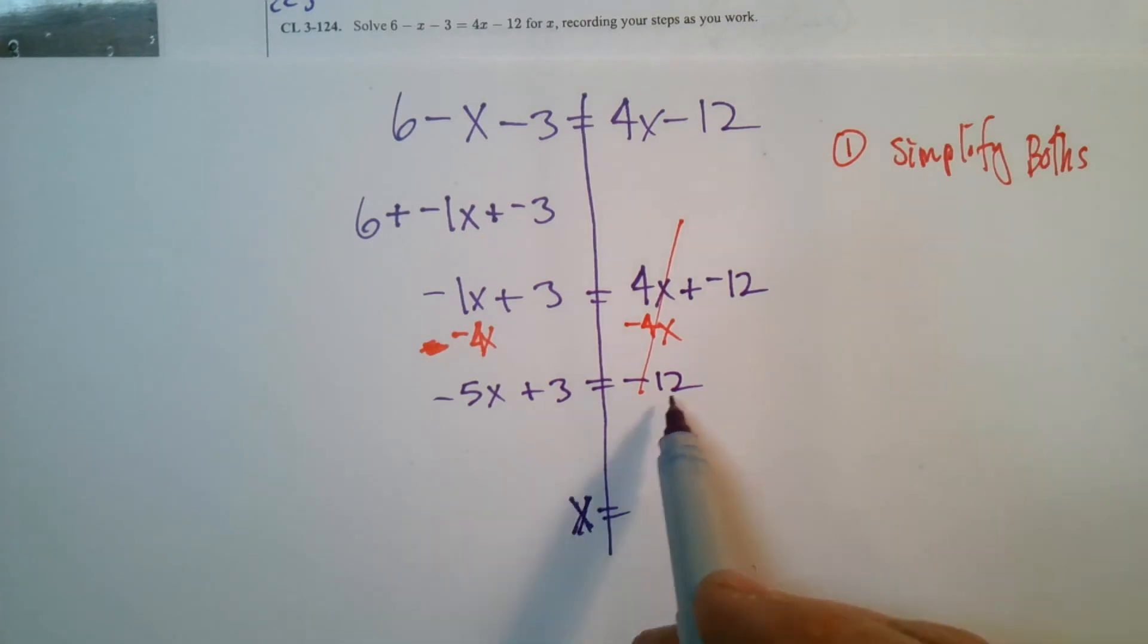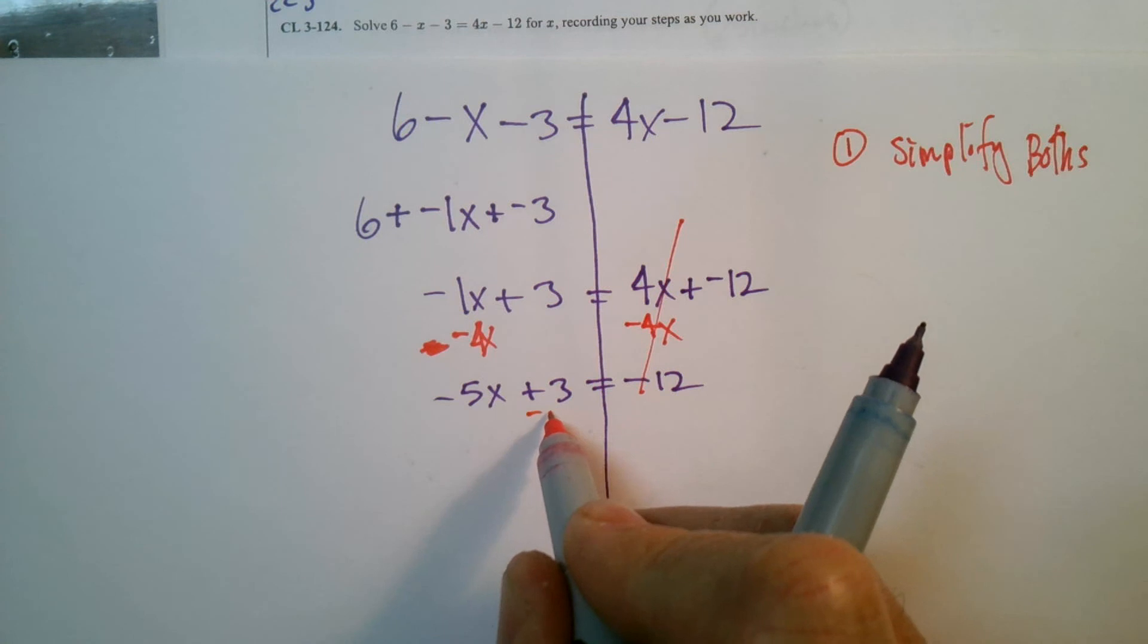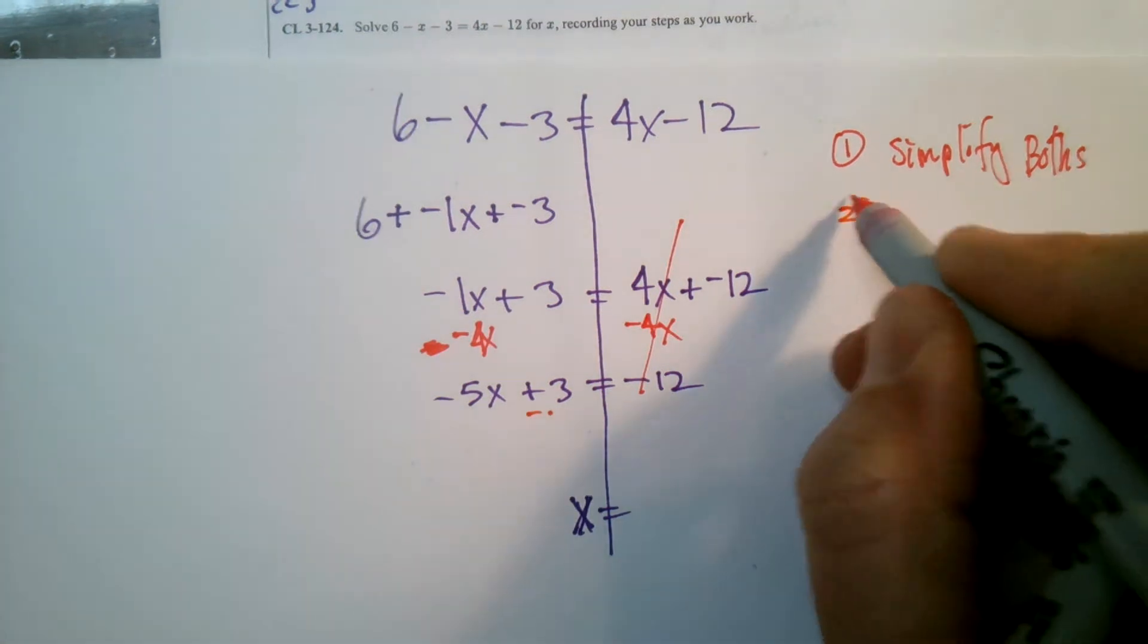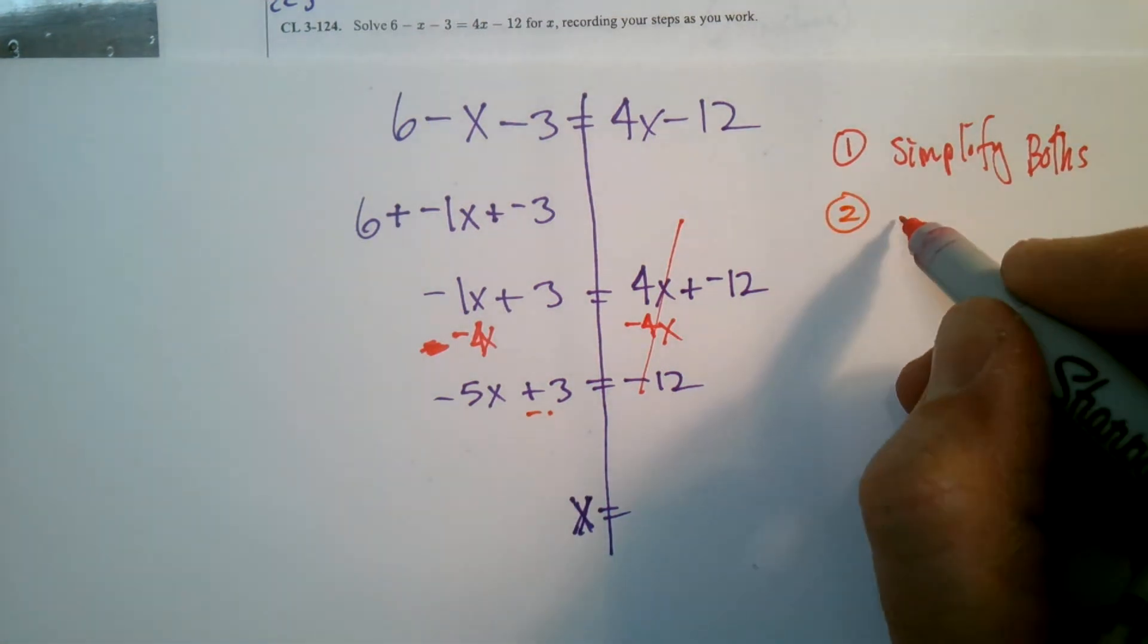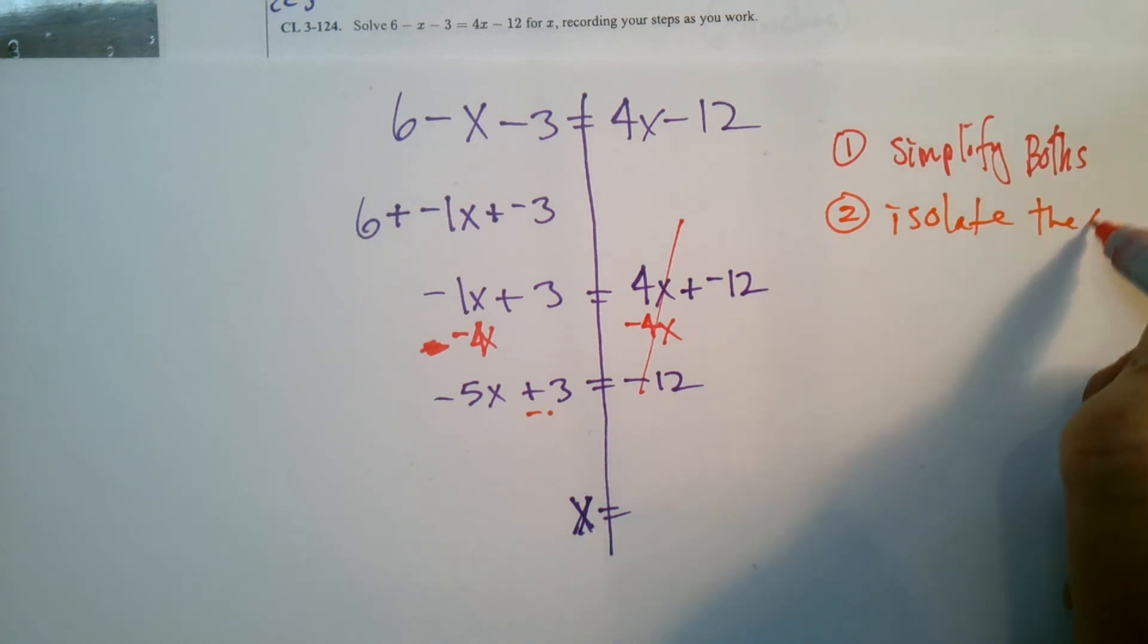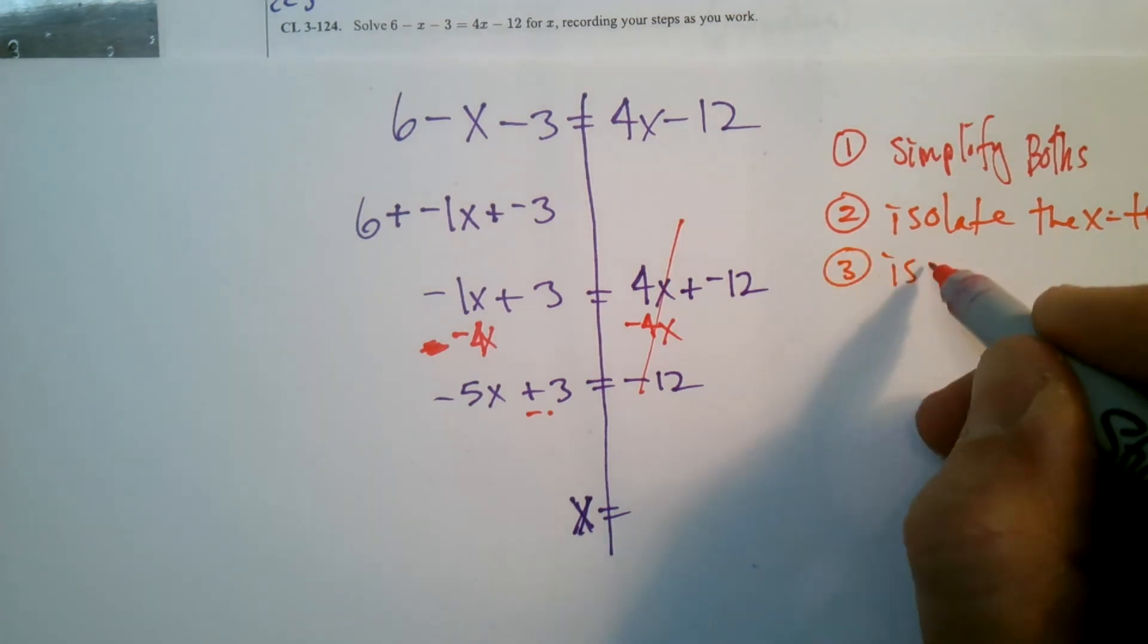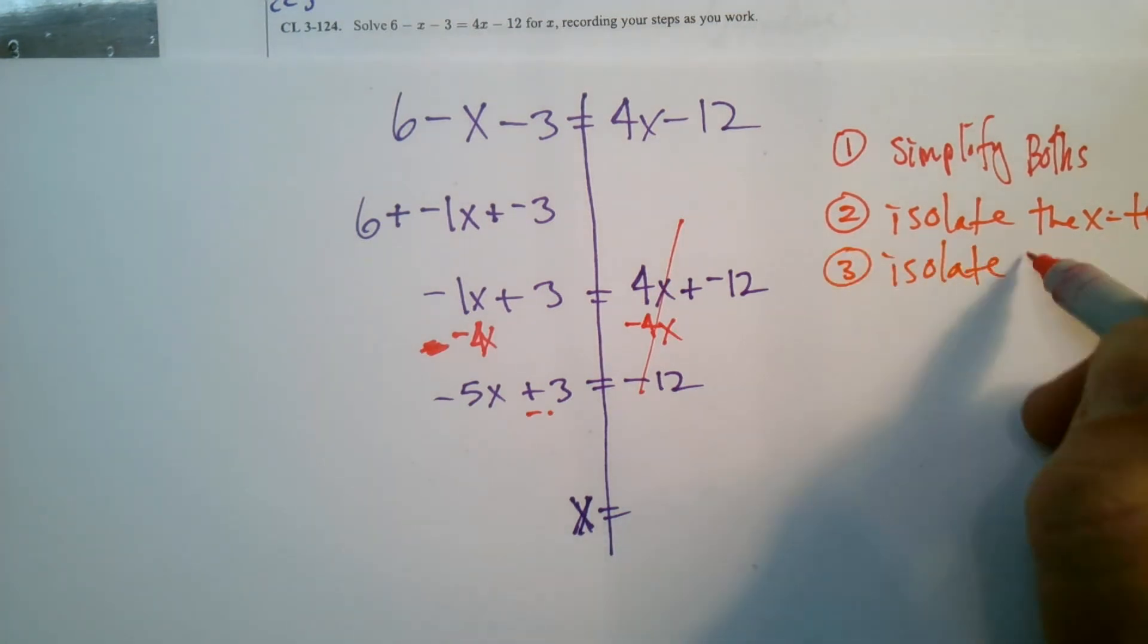So now that I've got my X no longer on this side, I want to get rid of my number terms that are on this side, my constant. So I'm going to subtract. That's the next step. My second step was to isolate the X or variable terms, I'll say X terms in this case because I'm dealing with X. And then the third is to isolate the constant. The constant is just the numbers without variables.